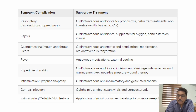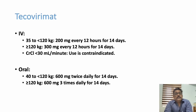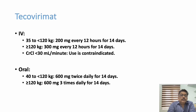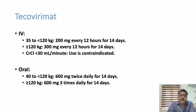Skin superinfections can be treated with antibiotics such as azithromycin, plus dressings and soothing agents. Tecovirimat has shown good trial results: for patients 35 to less than 120 kg, IV 200 mg every 12 hours for 14 days; for more than 120 kg, 300 mg every 12 hours for 14 days. If creatinine clearance is less than 30 ml/min, use oral preparation: 600 mg twice daily for patients 40–120 kg, or 600 mg three times daily for more than 120 kg, both for 14 days.